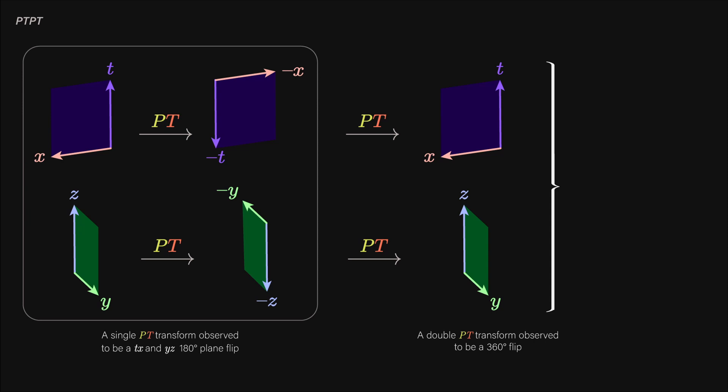Therefore, twice applying PT is equivalent to --t--x--y--z, which is another 180-degree flip in the two planes. Therefore, a PTPT transformation is just a 2π flip. And we see that this is equal to a double time reversal. Therefore, flipping time twice is equivalent to a 360-degree rotation.